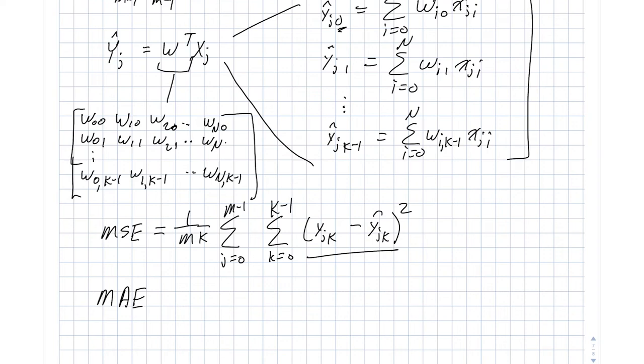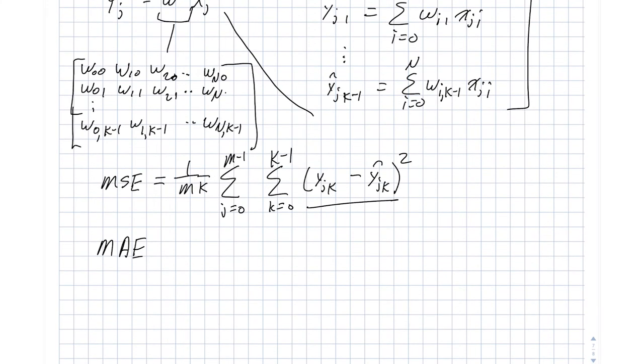And for those who are following the linear algebra side of things, we can also define the mean squared error in this way. We still have to sum over all of the samples, but we can talk about the vectors themselves and take a vector difference.